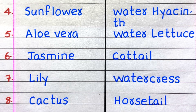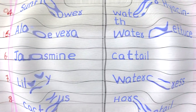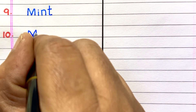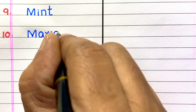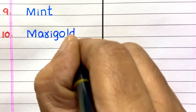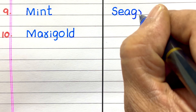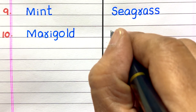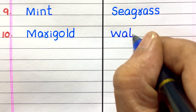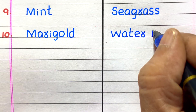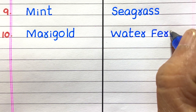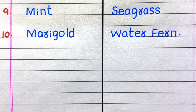8th horse tail. 9th name of a land plant is mint plant, 10th marigold.